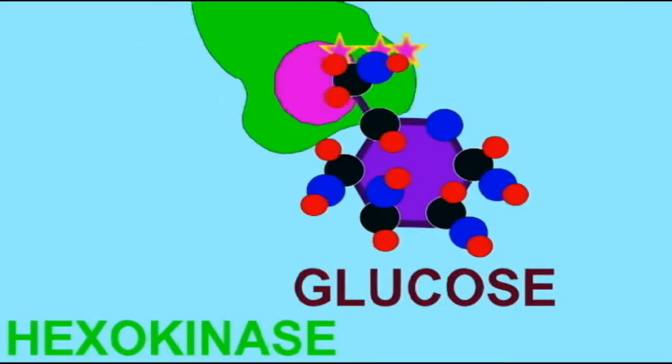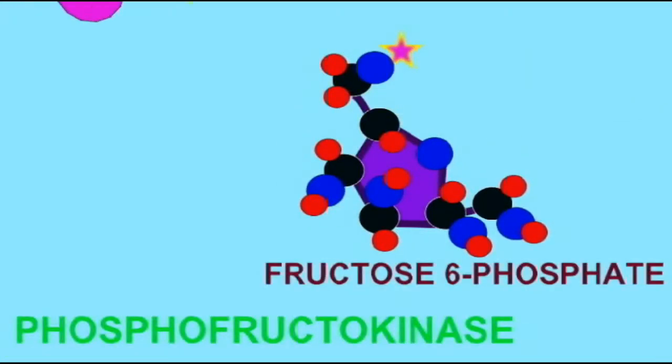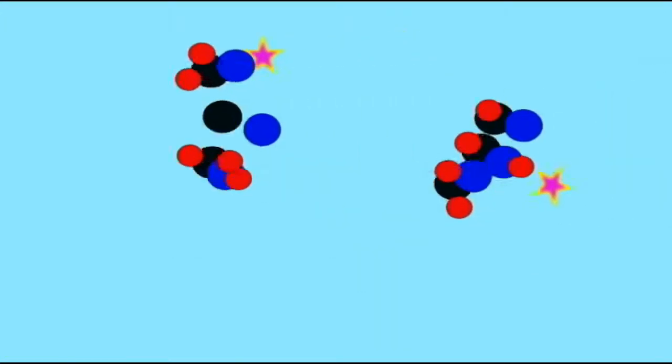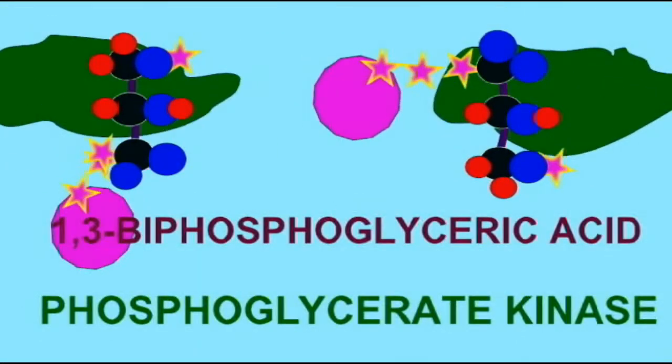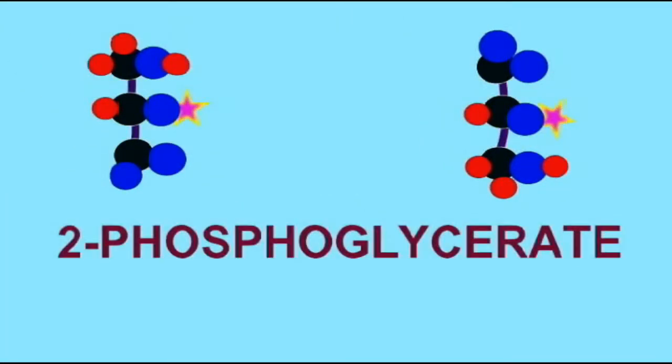When the earliest cells broke down sugars to obtain energy, they used glycolysis, which does not require oxygen. Appreciable levels of oxygen were not present in the Earth's atmosphere for half of its history.